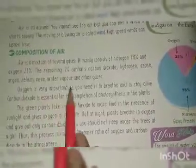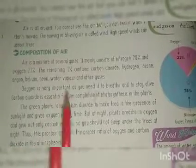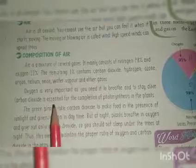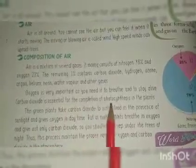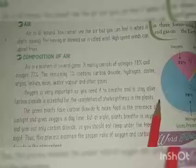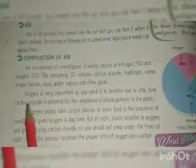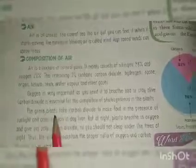Oxygen is very important as you need it to breathe and to stay alive. Carbon dioxide is essential for the completion of photosynthesis in plants. Just as we need oxygen, plants need carbon dioxide for photosynthesis.